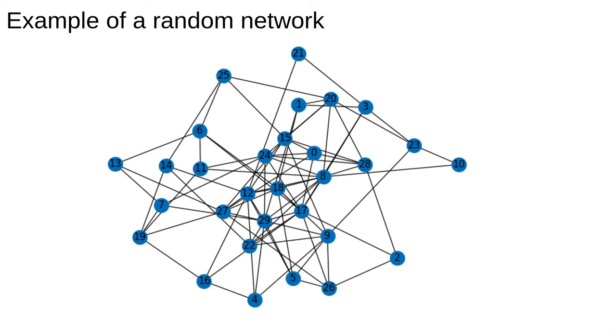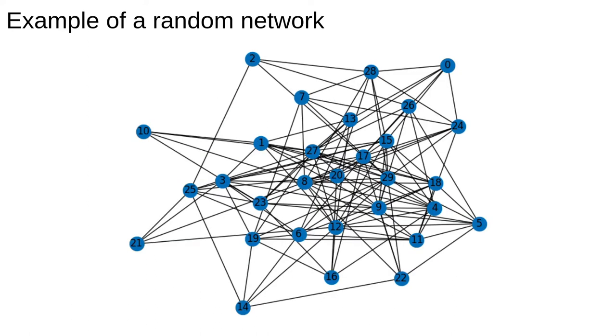This is an example of a random network generated with 30 nodes and p equals 0.2, now the network is connected. This is an example of one with 30 nodes and p equals 0.3, it's still connected with even more edges than before.